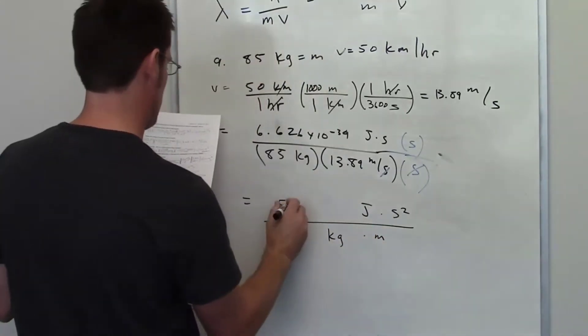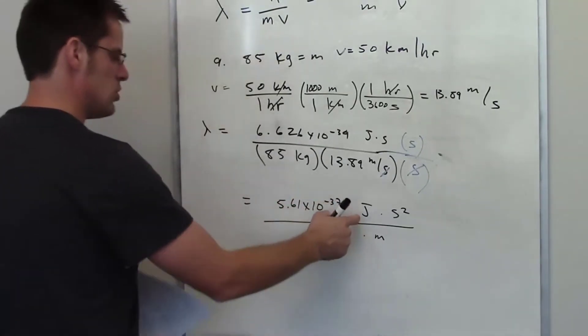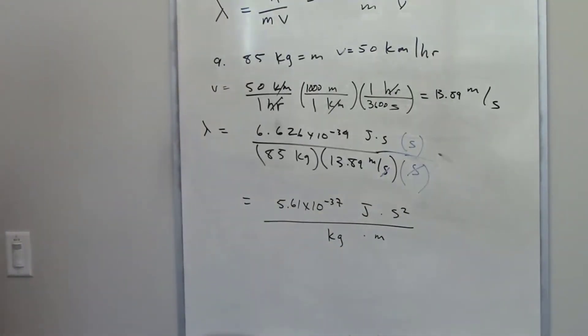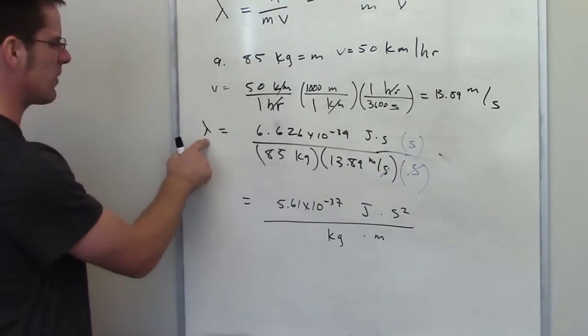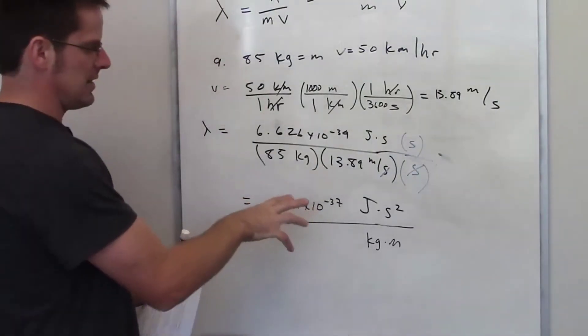The final numerical answer I end up getting is 5.61 times 10 to the negative 37 joules times seconds squared divided by kilogram meters. And once again, you might think that doesn't make sense, because it's asking for a wavelength. I'm supposed to end up with meters. This doesn't look like the right units.